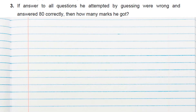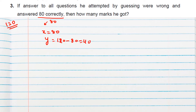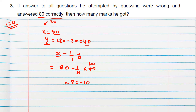Question 3: If all guessed answers were wrong and he answered 80 correctly, how many marks did he get? Total questions are 120, so x equals 80 and y equals 40. Using the marks formula: x minus 1/4 y equals 80 minus 10, which equals 70. So he got 70 marks.